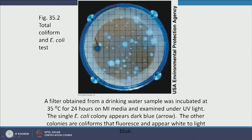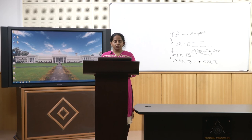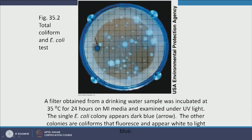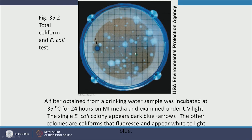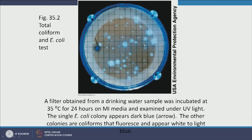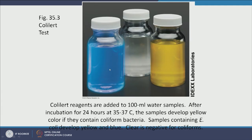To distinguish total coliforms from fecal coliforms: some coliforms are naturally found in soil and sediments, not only in the gut. Using MI media and examining plates under a UV lamp, white-fluorescing colonies are total coliforms, while dark blue colonies are E. coli — indicating fecal coliforms. This allows us to quantify both total coliforms and fecal coliforms separately.